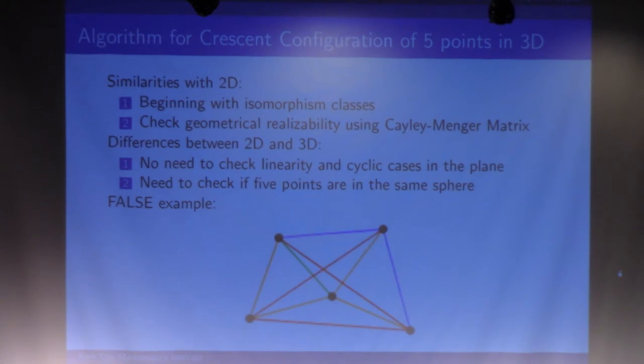However, there are differences between 2D and 3D. First, we no longer need to check if there are cyclic or linearity cases, because the condition mentioned before—that no more than three points lie in the same plane—automatically ensures no such cases will occur.